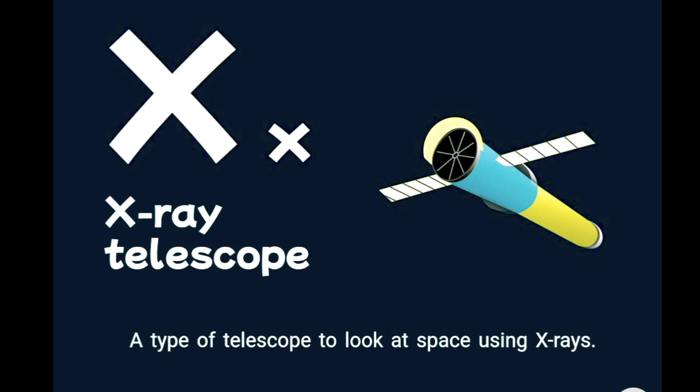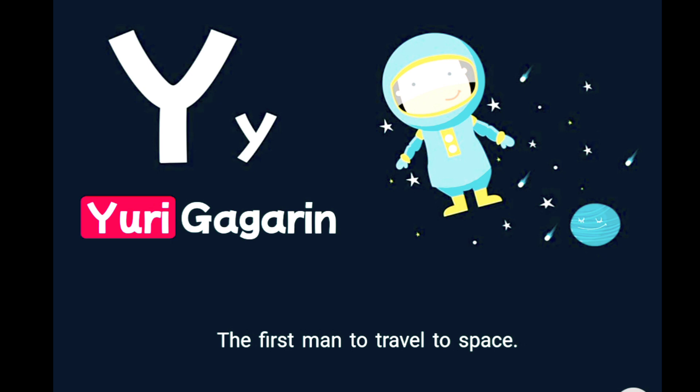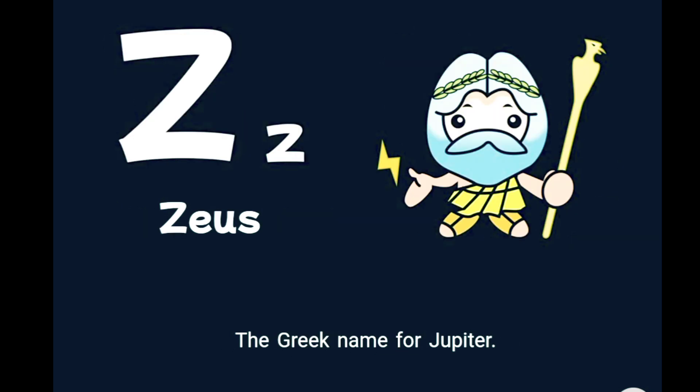Y is for Yuri Gagarin, the first man to travel to space. Z is for Zeus, the Greek name for Jupiter.